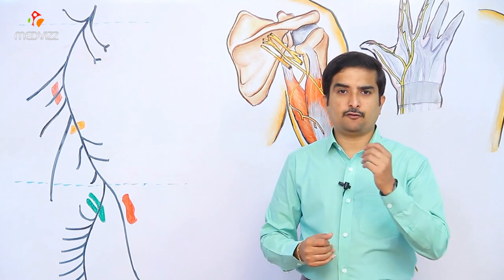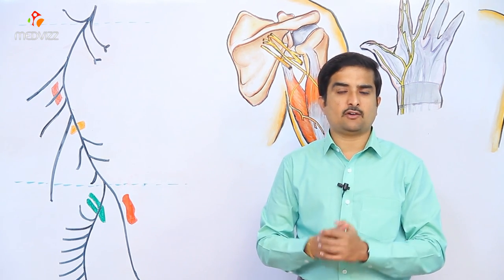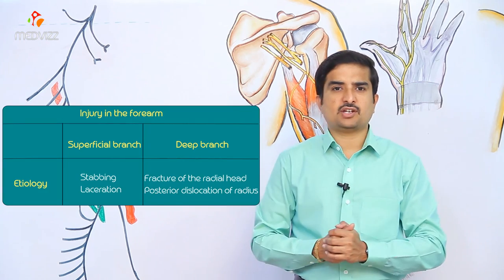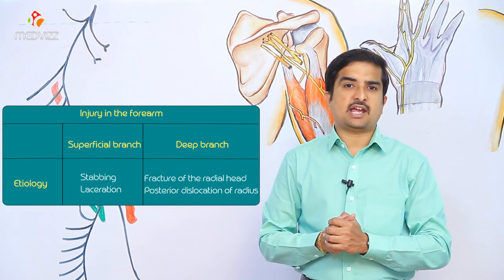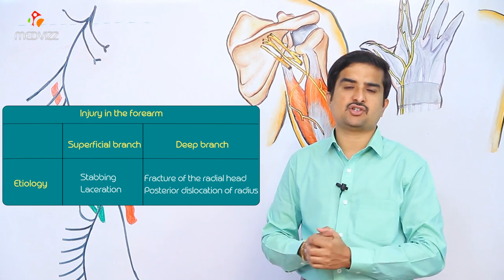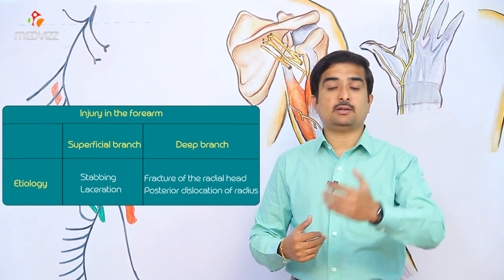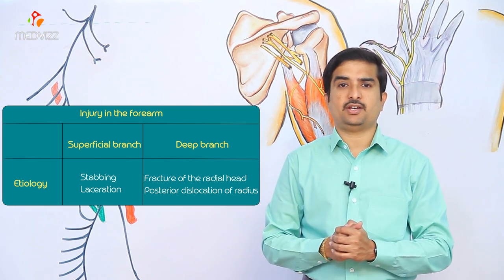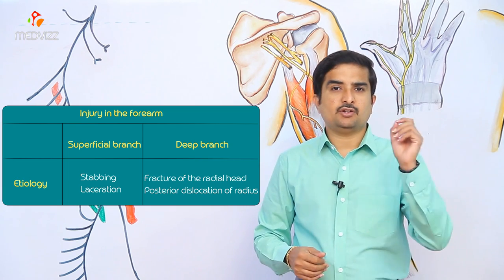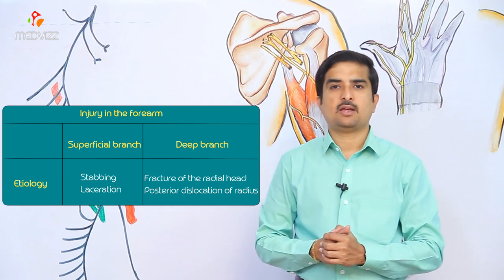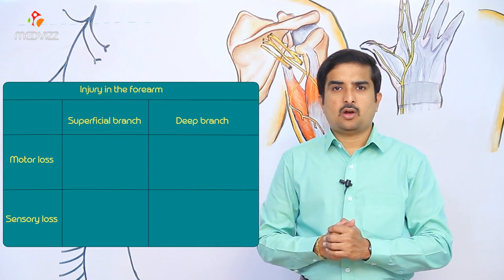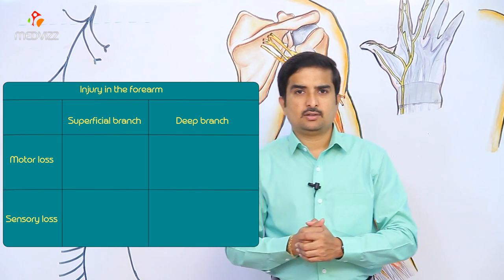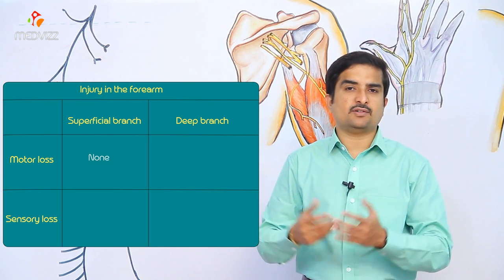Regarding injury of the nerve in the forearm, there are two terminal branches — the deep branch and the superficial branch. During injuries such as stabbing or laceration of the forearm, the superficial branch may be damaged. Damage to the deep branch is more commonly associated with fracture of the radial head or posterior dislocation of the radius. Since the superficial branch is purely sensory, injury to it results in no motor loss.